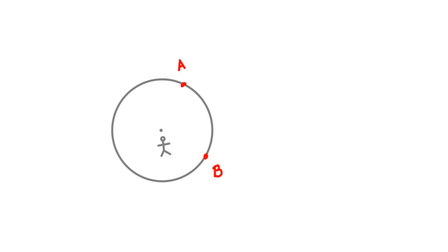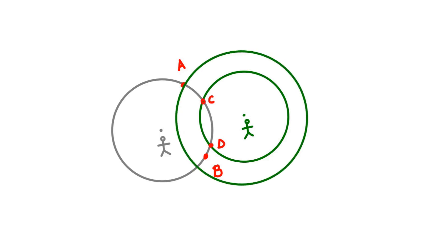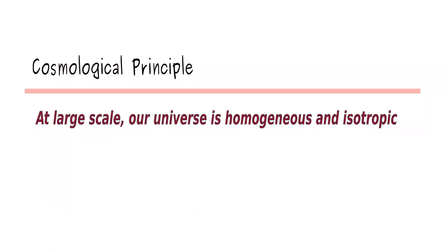In order to see this, let us consider two observers, and say both these observers find the universe to be isotropic. With respect to the first observer, the density would be the same at points A, B, C, and D. Whereas with respect to the second observer, the density at point E would also be the same. This way, one can show that density is the same at all points in space.